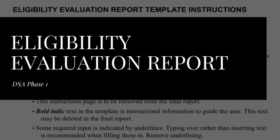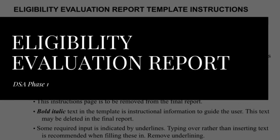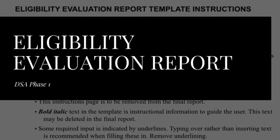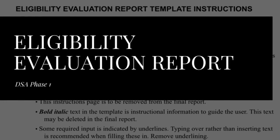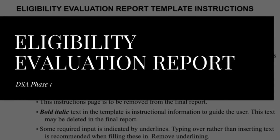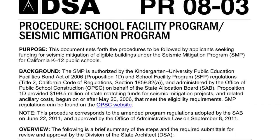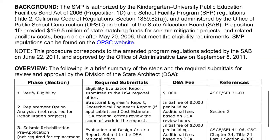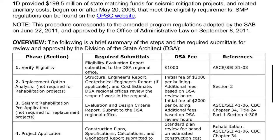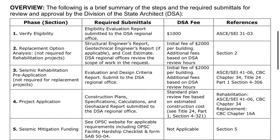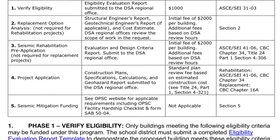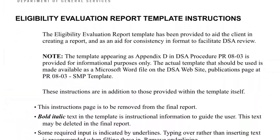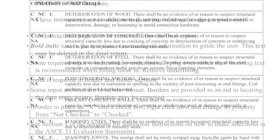If your facility meets all of these qualifying conditions, the next step would be to have a licensed design professional complete the eligibility evaluation report by the DSA. The DSA calls each of their steps of the review process phases, and the eligibility evaluation report is considered phase 1. The exact procedures for this step can be found on pages 1 through 3 of Procedure 08-03. For ease of use, the DSA has created a template that applicants can use to create this report, hyperlinked on page 1, section 1 of the PR-0803. If you click on that hyperlink, the eligibility evaluation report template will open as a Word document and will be ready for your use.